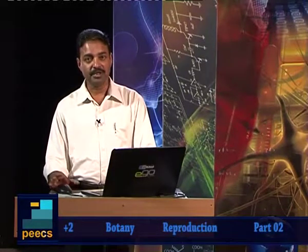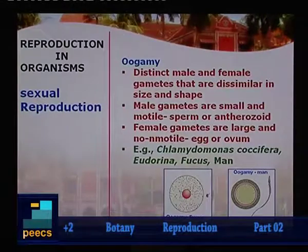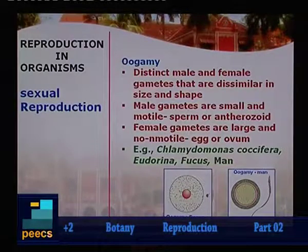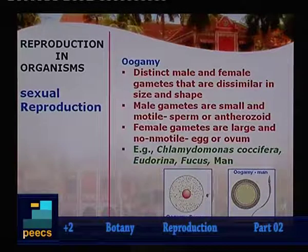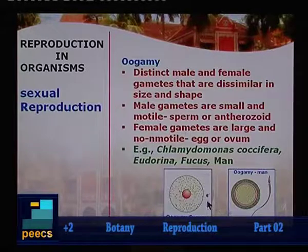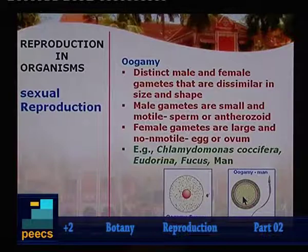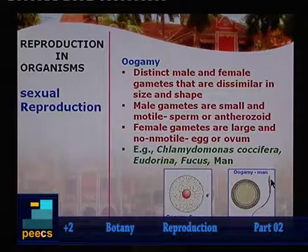The third and most advanced type, seen in all higher organisms, is oogamy, where fusing gametes are dissimilar both morphologically and physiologically. The male gametes are smaller, motile and active. The female gametes are larger, usually non-motile, called the egg or ovum. Examples include Chlamydomonas coccifer, Volvox, Fucus and human beings. The female gamete is very large in size while the male gamete is a small pyriform motile cell.